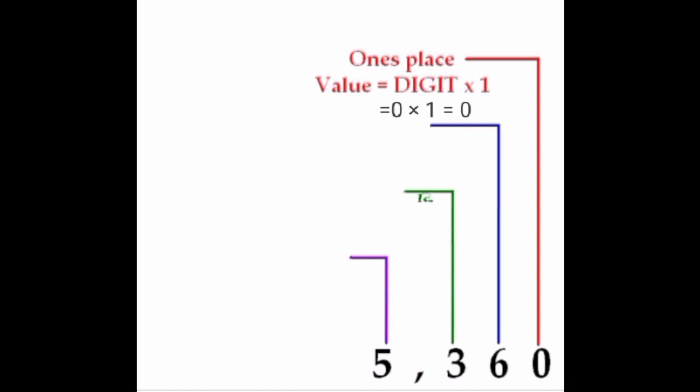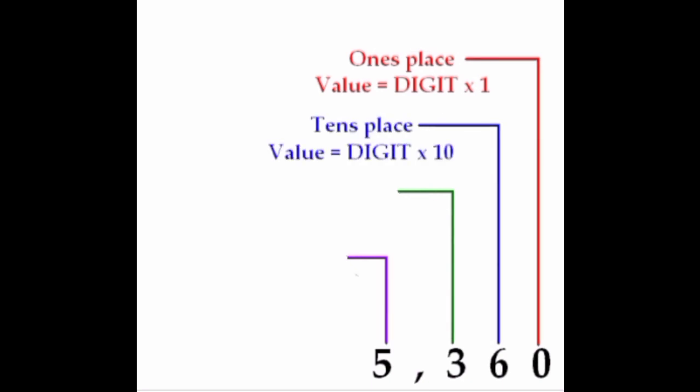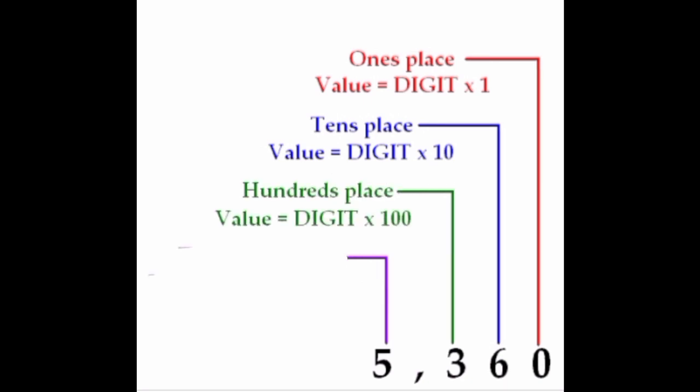Next, find the place value of 6. 6 is in which place, dears? Yes, very good — tens place. So, the place value is 6 into 10, which is equal to 60. Therefore, the place value of 6 is 60. Next, find the place value of 3. 3 is in which place, dears? Yes, very good — hundreds place. So, 3 into 100 is equal to 300. Therefore, the place value of 3 is 300.